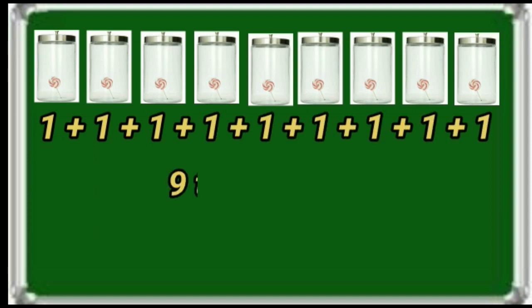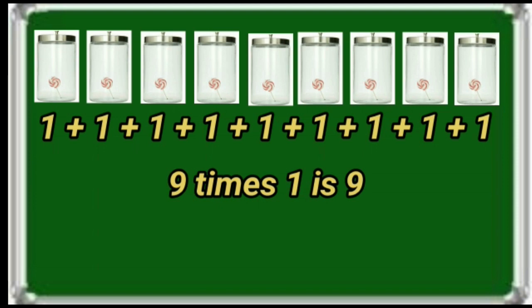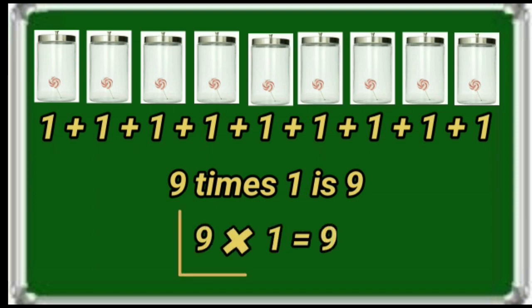Look here. Now each jar has 1 lollipop. So 1 is repeating 9 times. 9 times 1 is 9. Total 9 lollies. That can be written as 9 1's = 9.